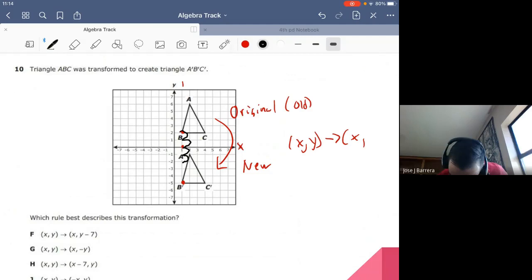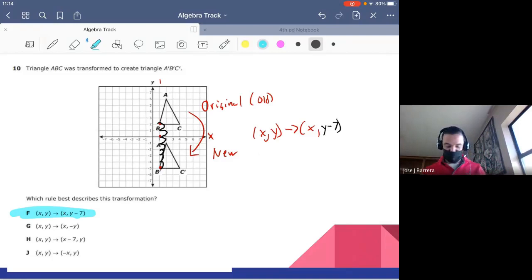Now our Y, it moved one, two, three, four, five, six, seven. Down seven. So Y minus seven. What is our correct response? Letter F. Make sure that you know when it just slides down, it's a change in Y. When it slides to the sides, it's a change in X.